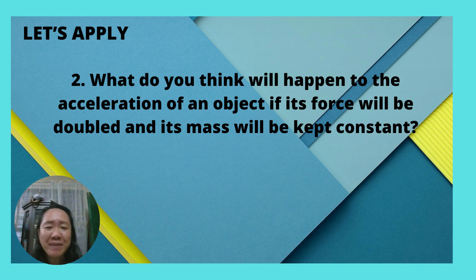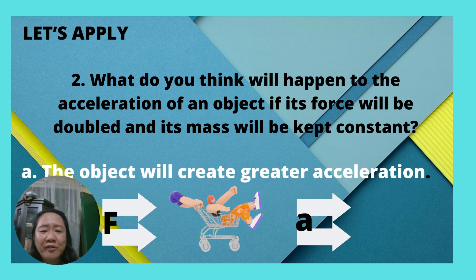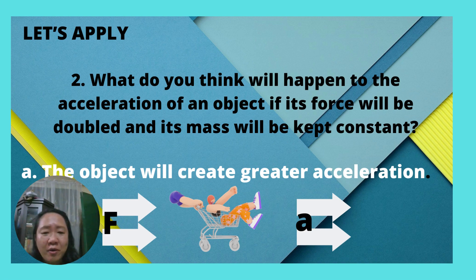What do you think will happen to the acceleration of an object if its force will be doubled and its mass will be kept constant? A, the object will create greater acceleration. Or B, the object will create a lesser acceleration. Of course, the object will also create a greater acceleration, because the force is doubled — therefore, acceleration will also be doubled.